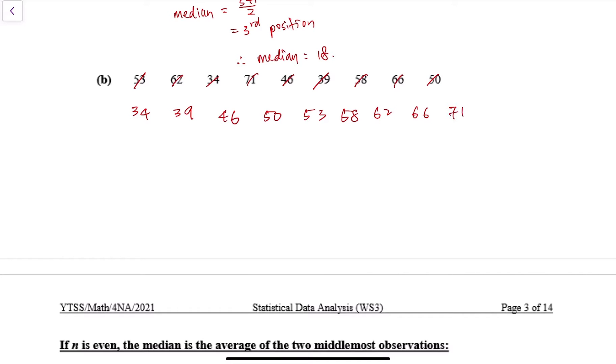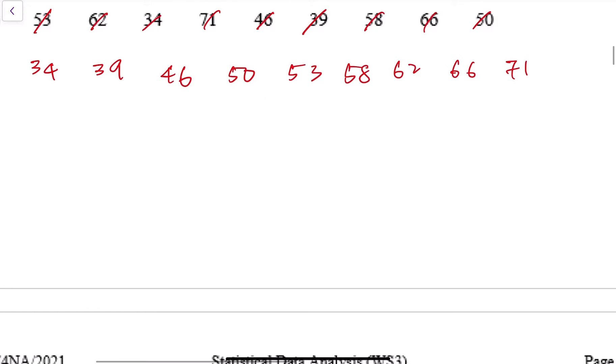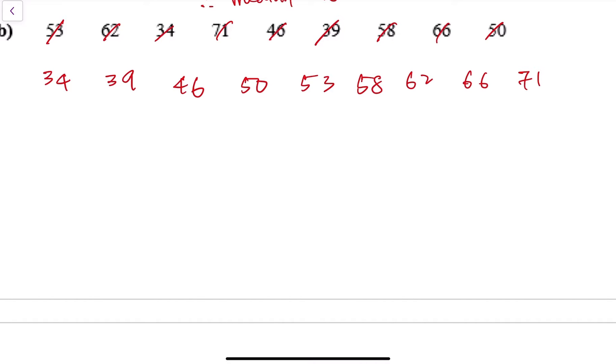So I suggest you to do what I do. Every time you write down a number, you strike it out. So you make sure you don't forget or you miss out any number, or you repeat writing some number, then it will be quite bad also. So total, we have nine numbers here.